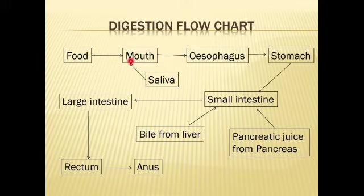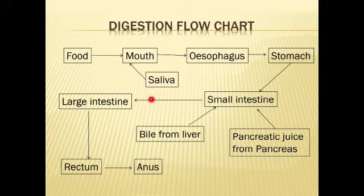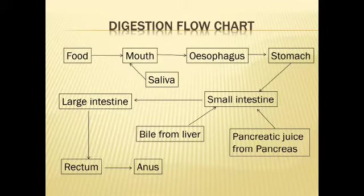Here is the digestion flow: food goes to the mouth, saliva is produced in the mouth, then food moves to the esophagus, to the stomach, to the small intestine — where bile from the liver and pancreatic juice from the pancreas are added — then to the large intestine, the rectum, and finally the anus.